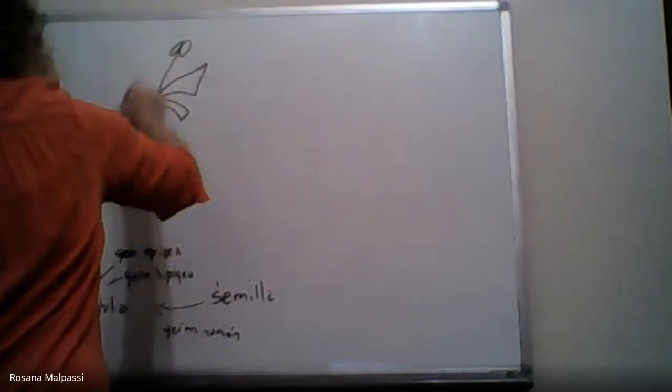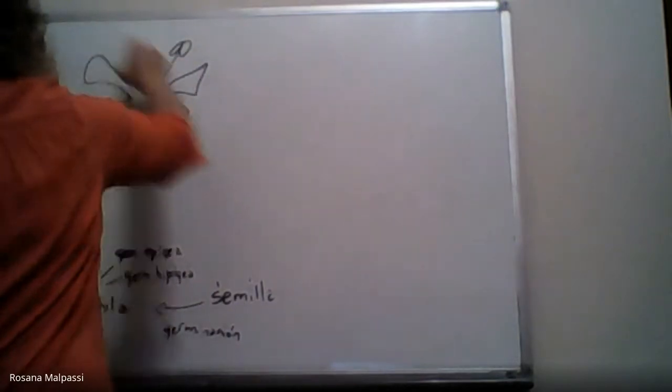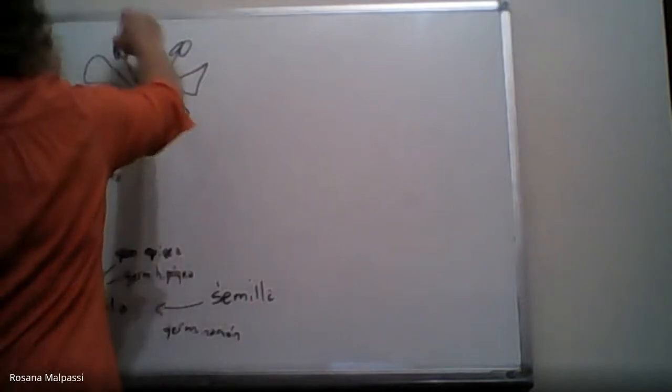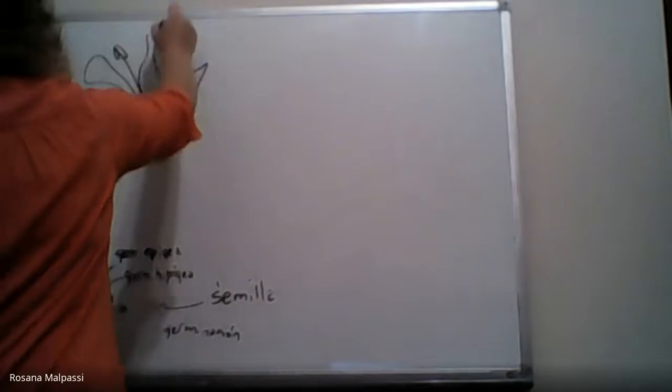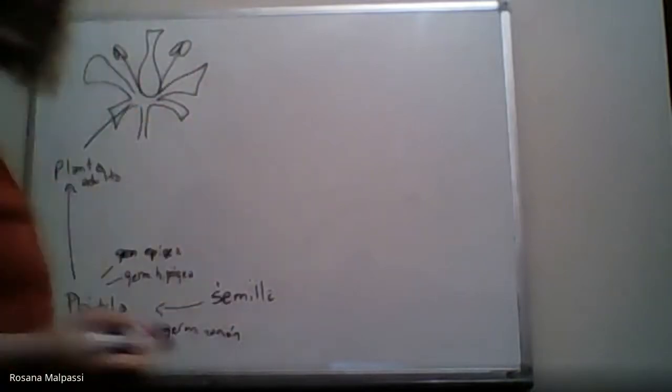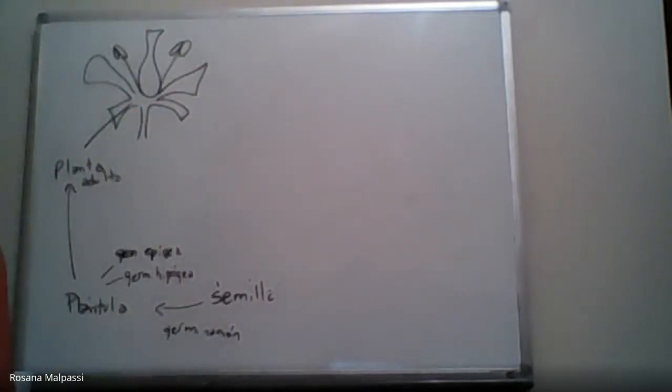Y en la flor, recuerden, estaba sostenida por un pedicelo. En acalis, corola, siempre hablando en general, androceo y gineceo. Y acá podríamos estar metiendo todo lo que es fórmula, diagrama y análisis floral.